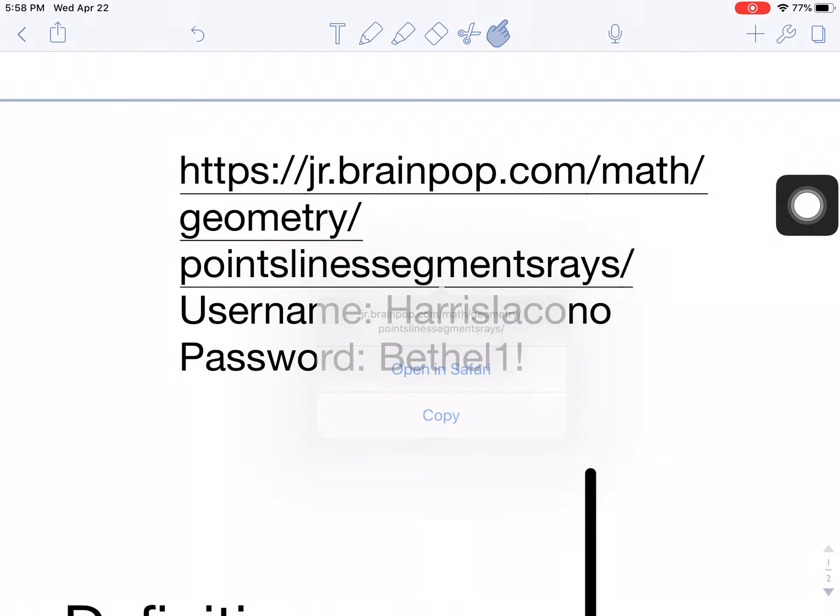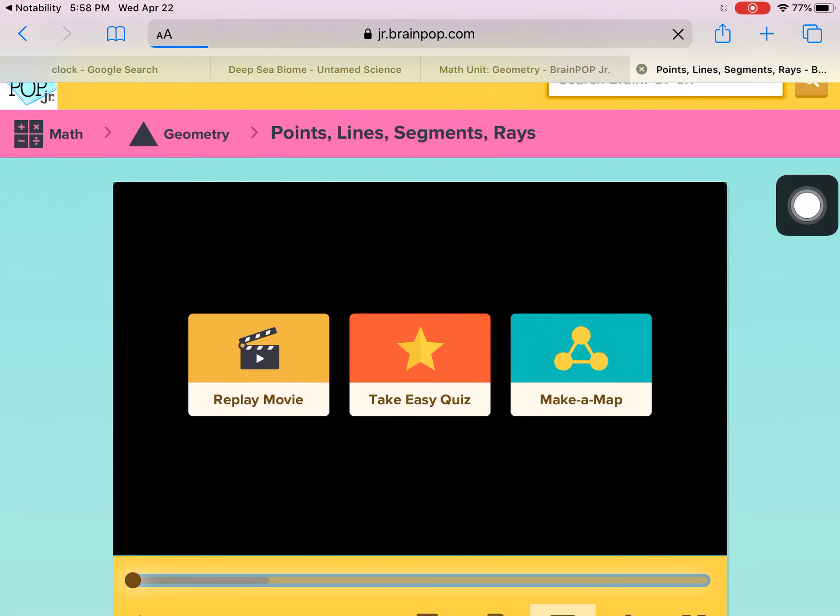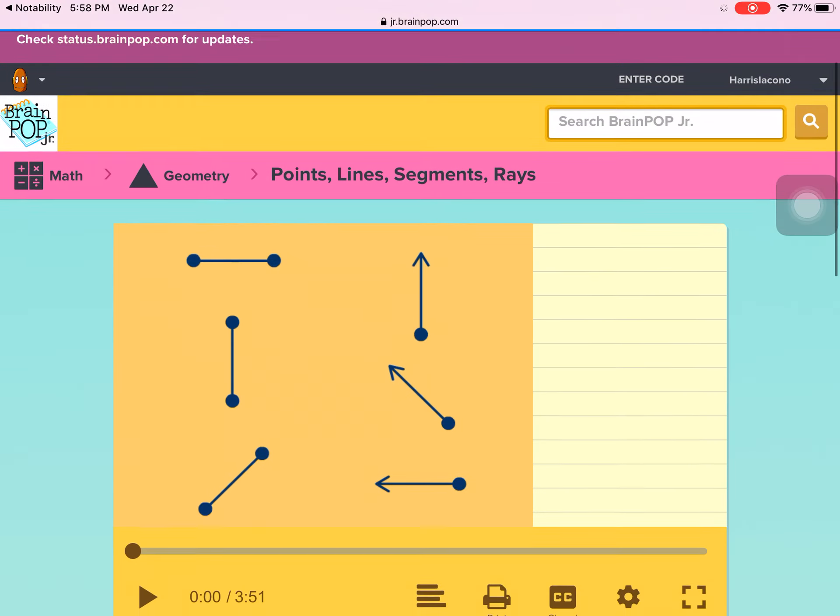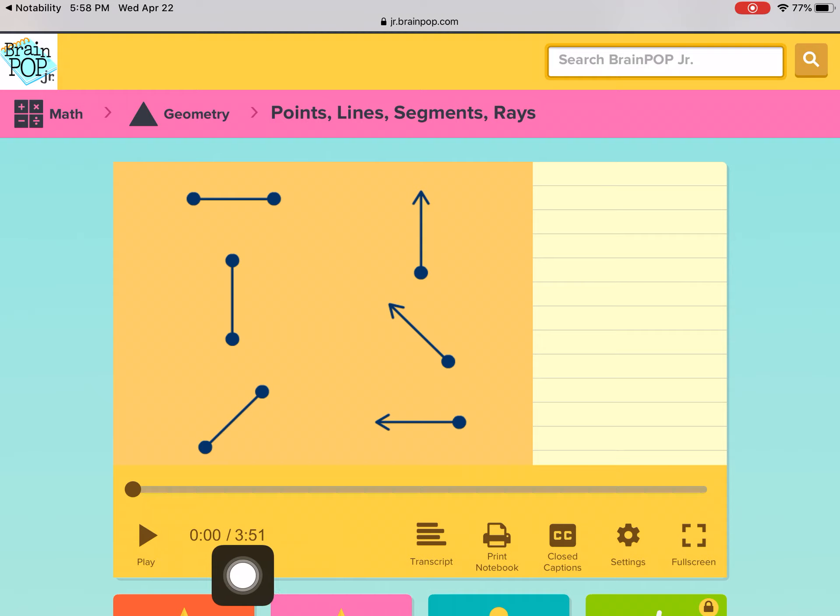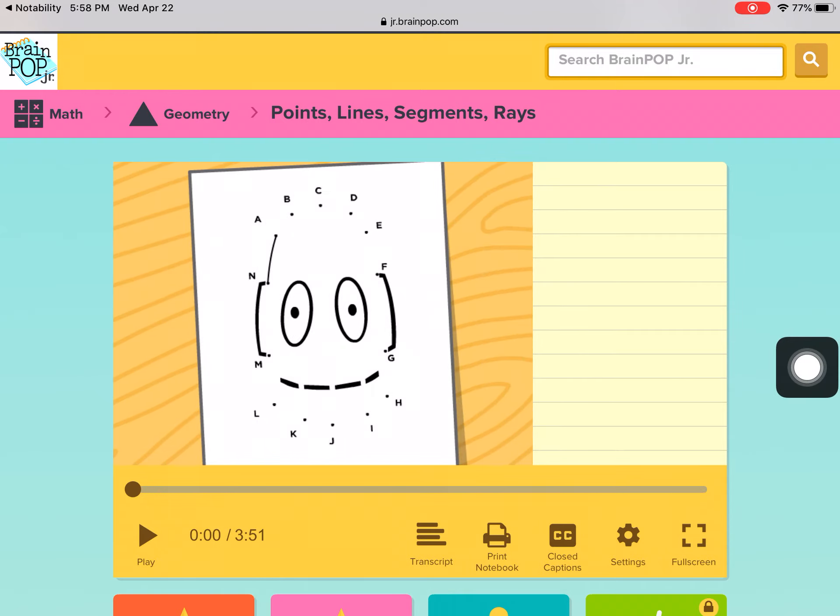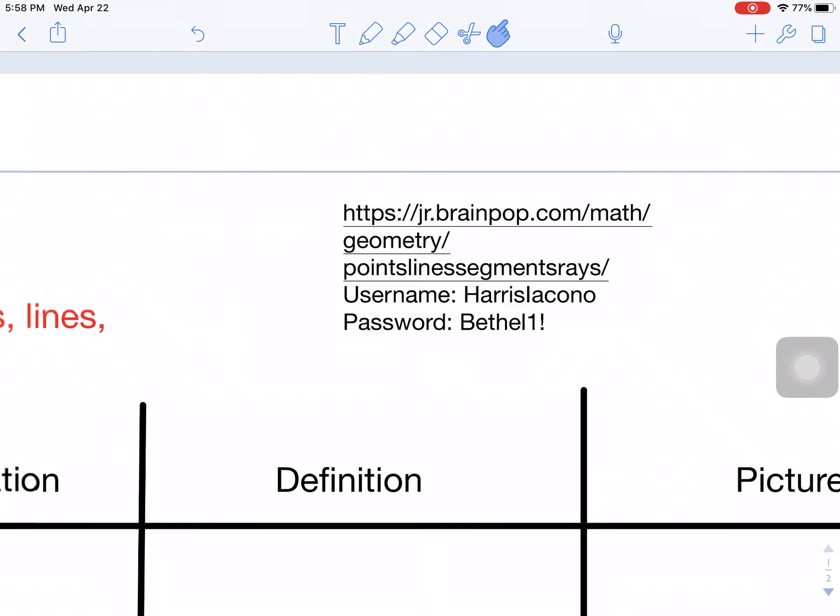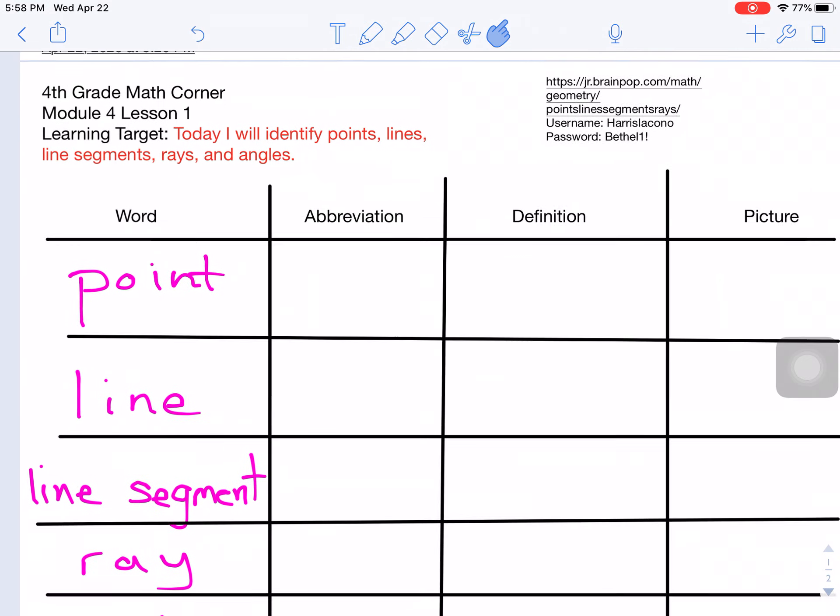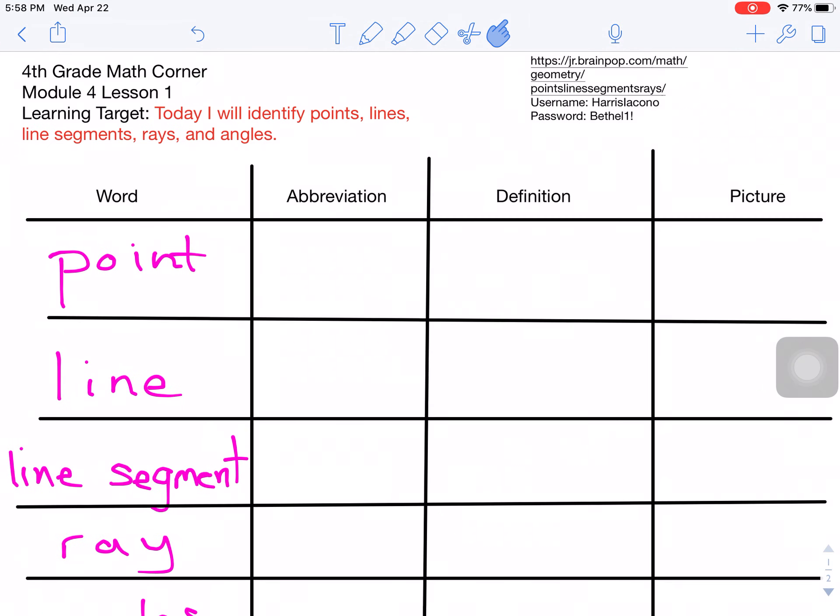When you get there, it will look like this. It is a three-minute and 51-second video that is very useful in understanding the different parts that make up a plane figure or a shape. After you watch the video, you will understand these different words. We're going to keep track of the words, how we abbreviate them or write them in geometry. We're going to keep track of their definition and we'll draw a picture. Then we will be able to use these to do our problem set.